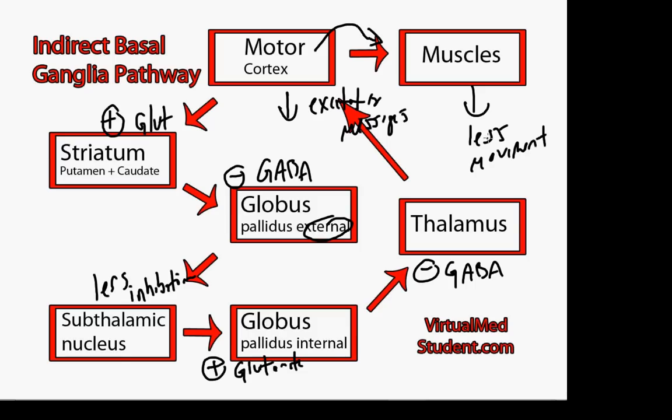And that in a nutshell, in a very simplified form, is how the indirect basal ganglia pathway helps inhibit unwanted motor movement.